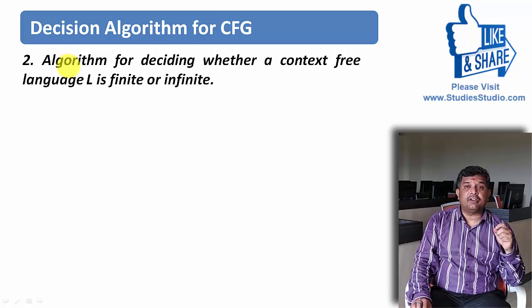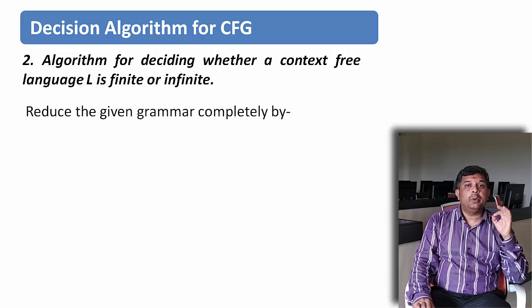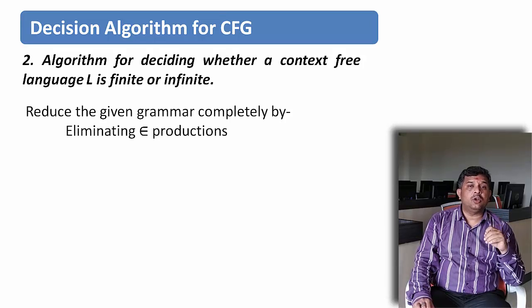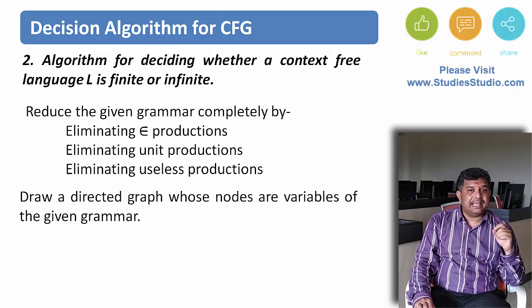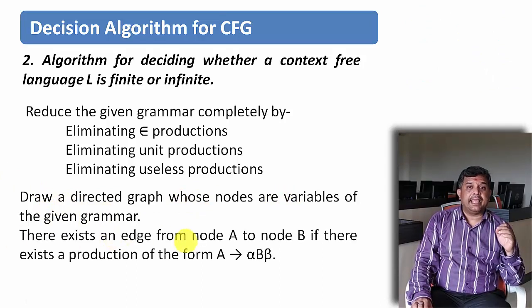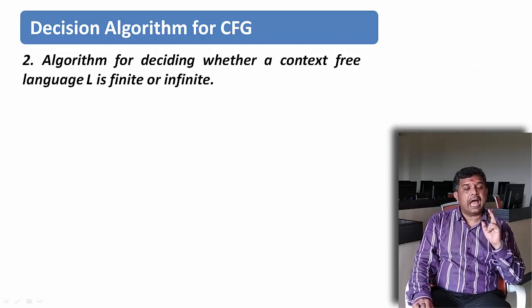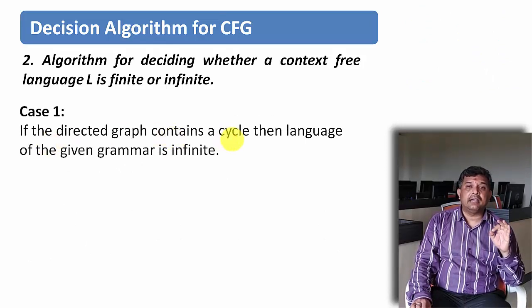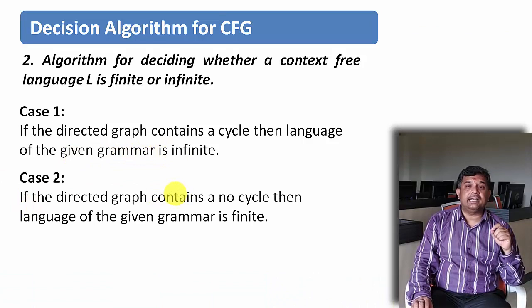The second algorithm is for deciding whether a context-free language L is finite or not. First we need to reduce the grammar by eliminating epsilon symbols, unit productions, and useless symbols. Then we draw a directed graph whose nodes are the variables of the given grammar. There exists an edge from node A to node B if there exists a production of the form A derives alpha B beta. After drawing the directed graph we can have two cases: if the graph contains a cycle then the language is infinite; if it contains no cycle then the language is finite.